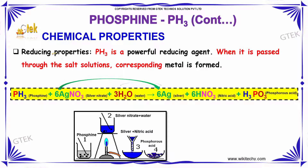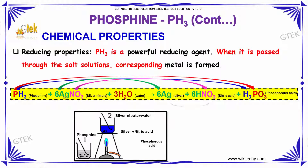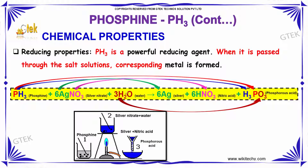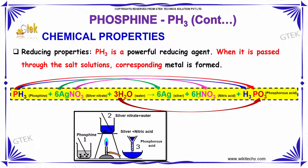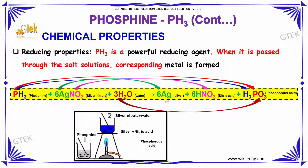Phosphine is a powerful reducing agent. When it is passed through a salt solution, the corresponding metal is deposited. For example, Phosphine with silver nitrate and water will give silver, nitric acid, and phosphorus acid — it removes nitrate from silver nitrate and takes out the silver.